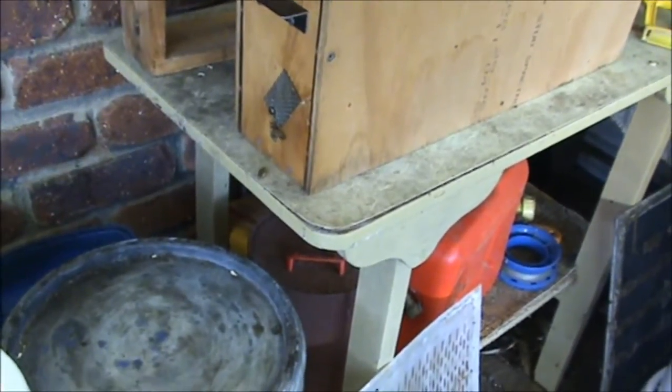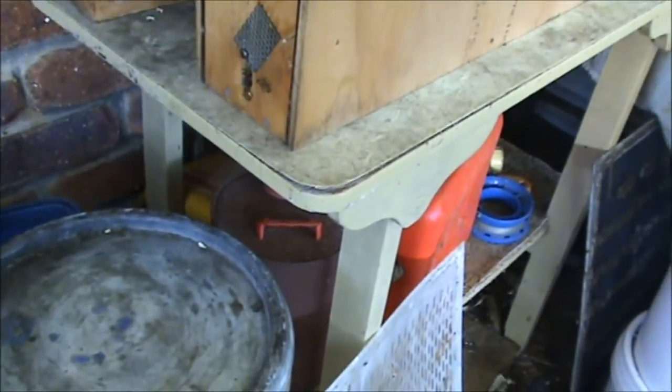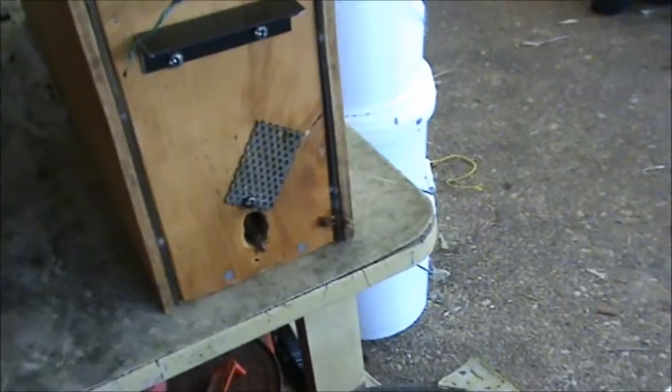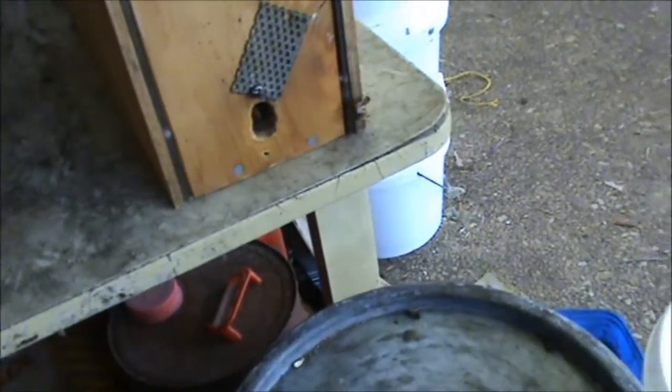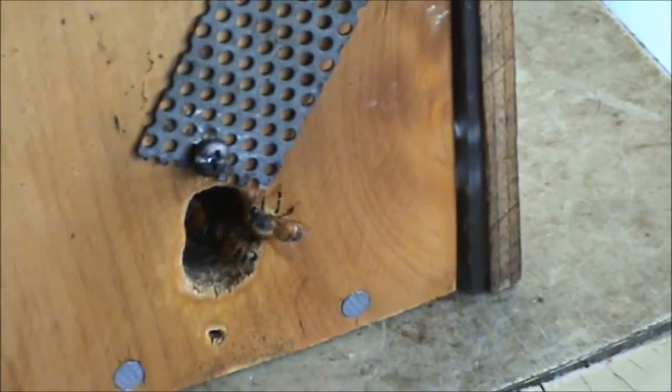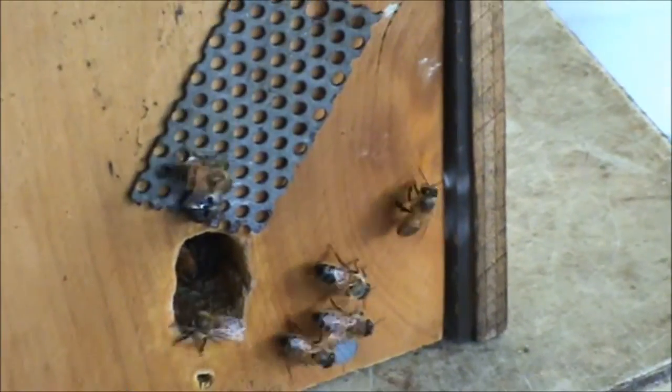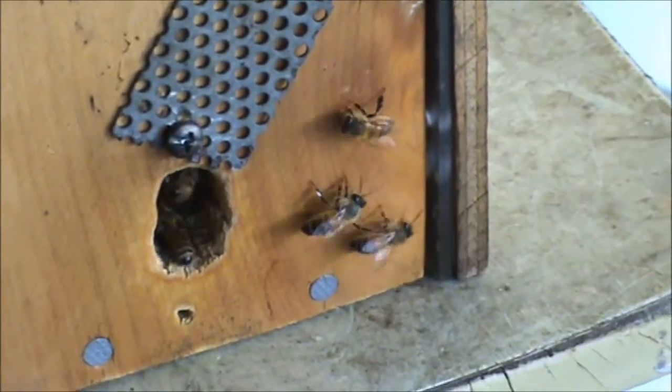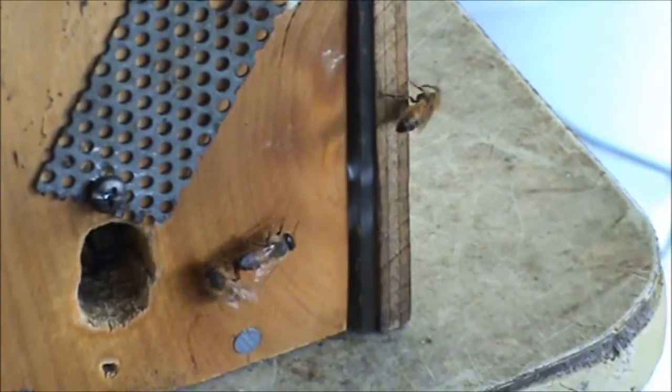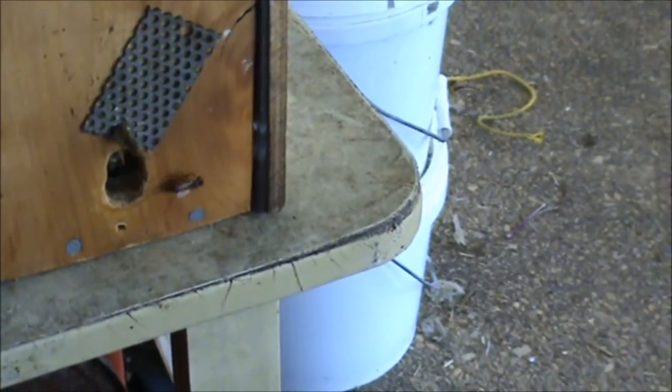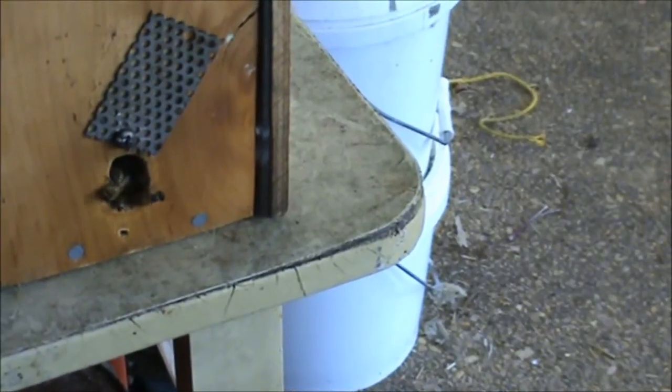Now, there's a bee returning. And she's got pollen on her legs. Another bee returning. I'll get her out of the flight path and I'll zoom in on it. I'll just sit here and hold it and wait for the bees to come back. Now, one just returned then. The bee's leaving. One returned home. Another one returned.